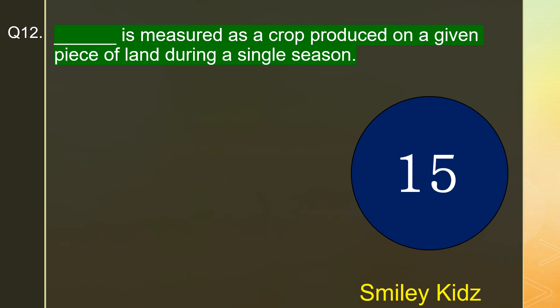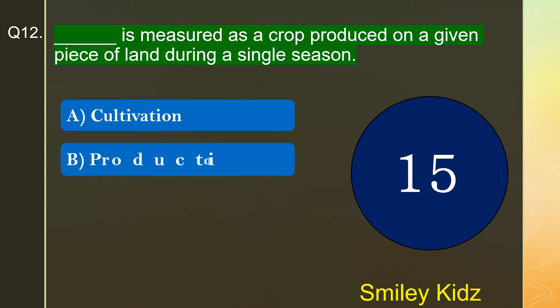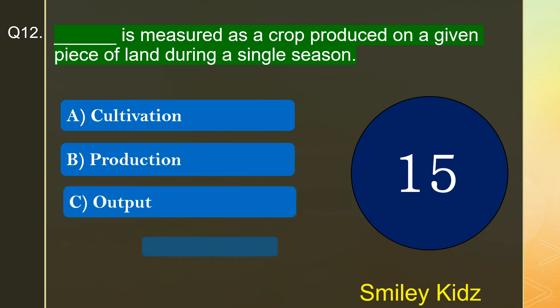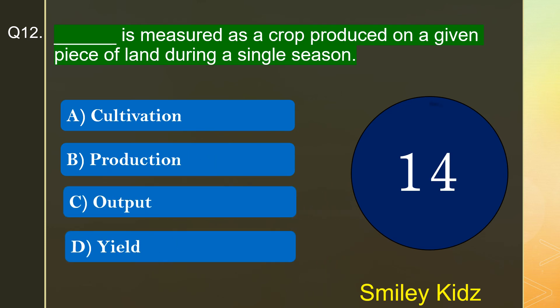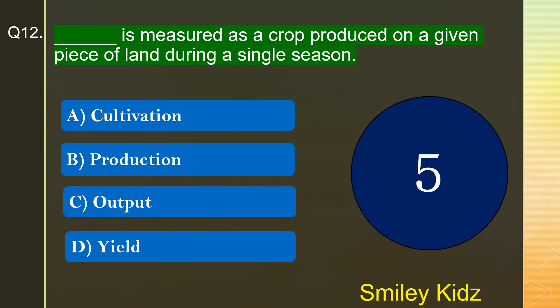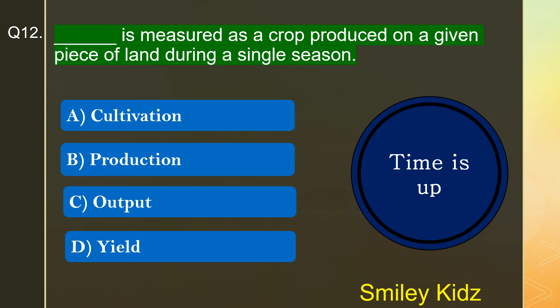Question number 12. Dash is measured as a crop produced on a given piece of land during a single season. The options are A. Cultivation, B. Production, C. Output, or D. Yield. Your time starts now. Your time is up and the right answer is option D. Yield. Yield is measured as a crop produced on a given piece of land during a single season.